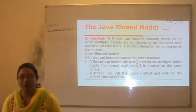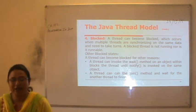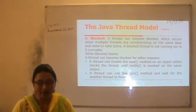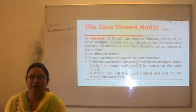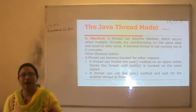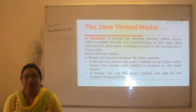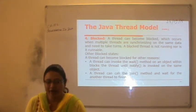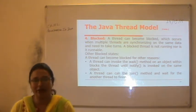The fourth stage is blocked. A thread can become blocked when multiple threads are synchronizing on the same data and need to take turns. A blocked thread is neither running nor runnable — it is not in the ready state or the running state. Synchronization means only one thread can enter that particular block at a time, so all other threads have to wait.